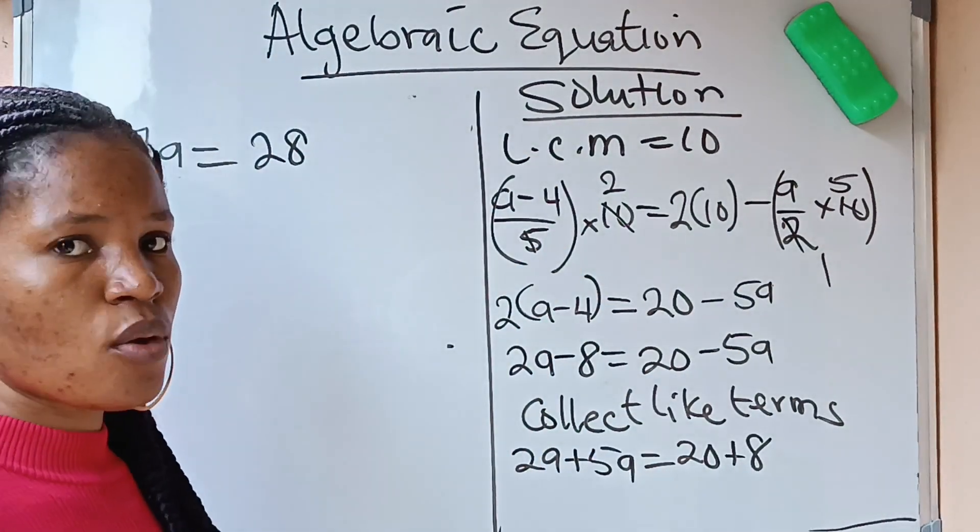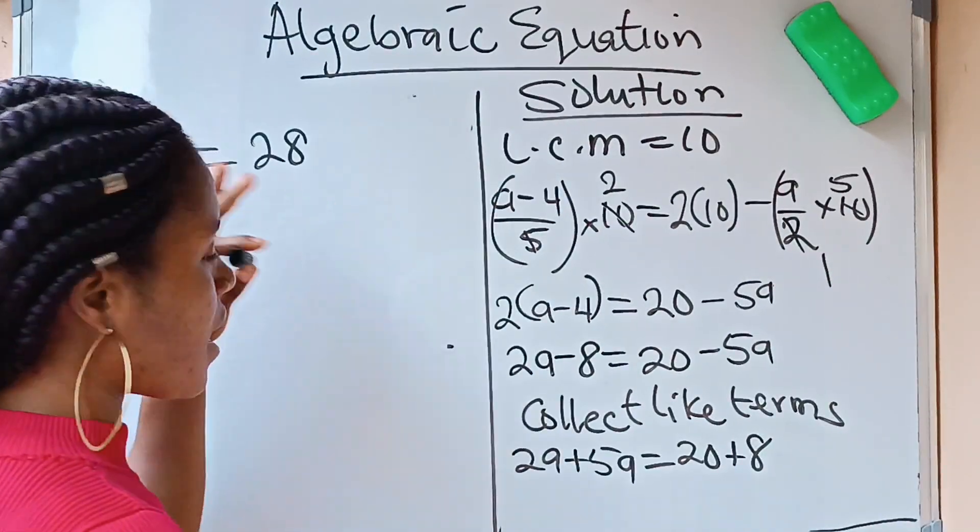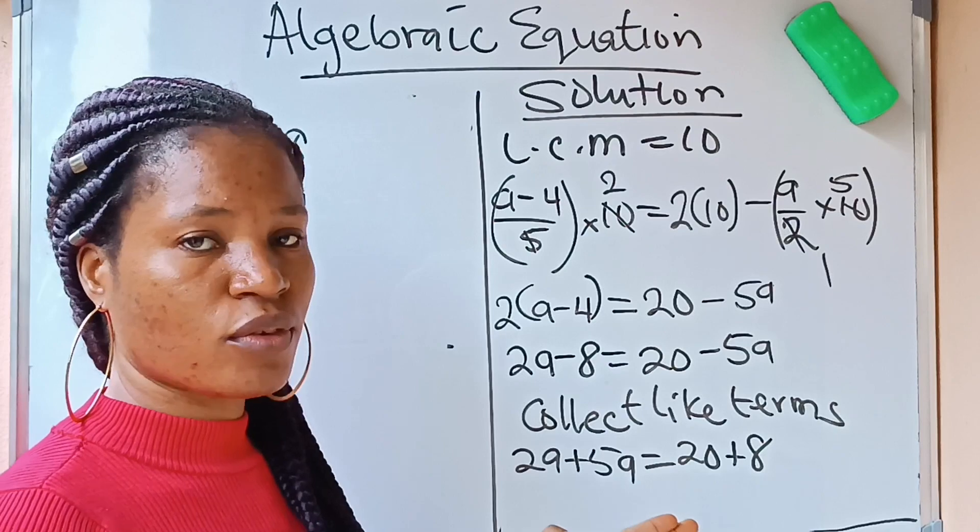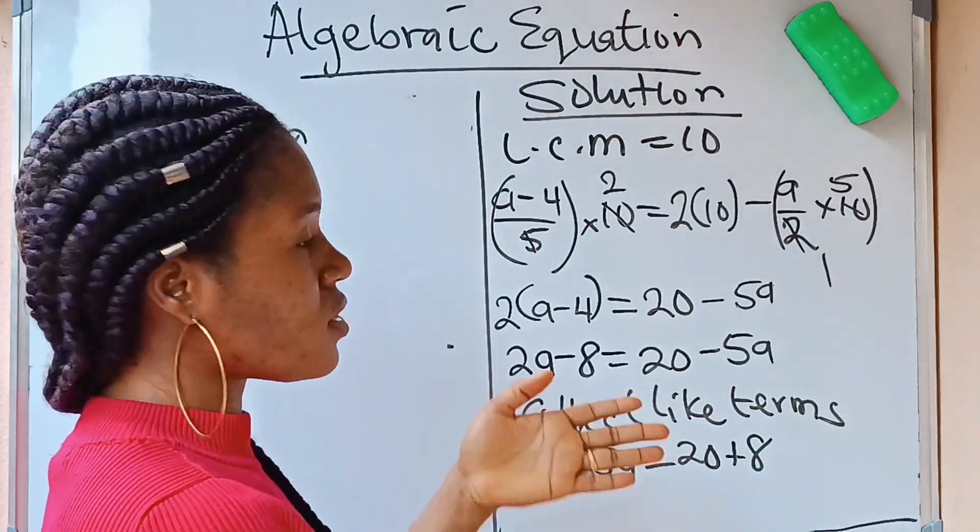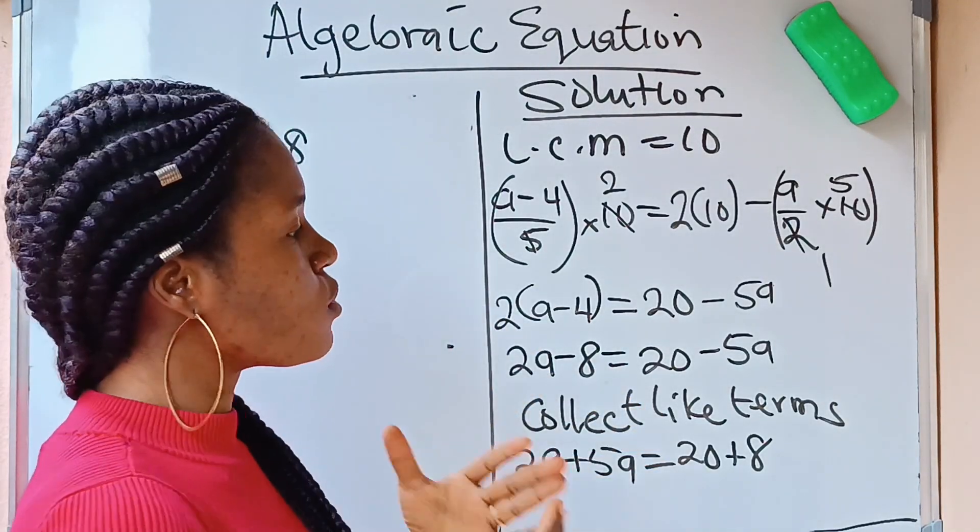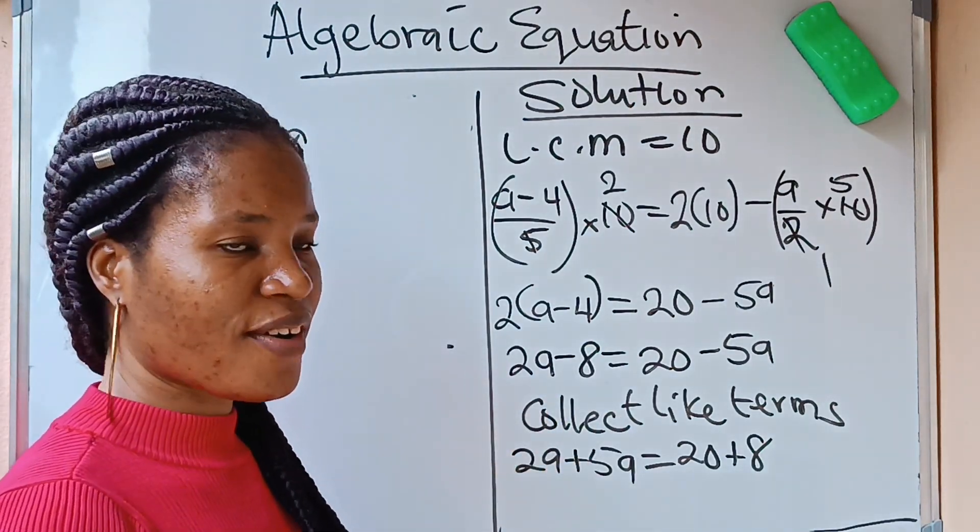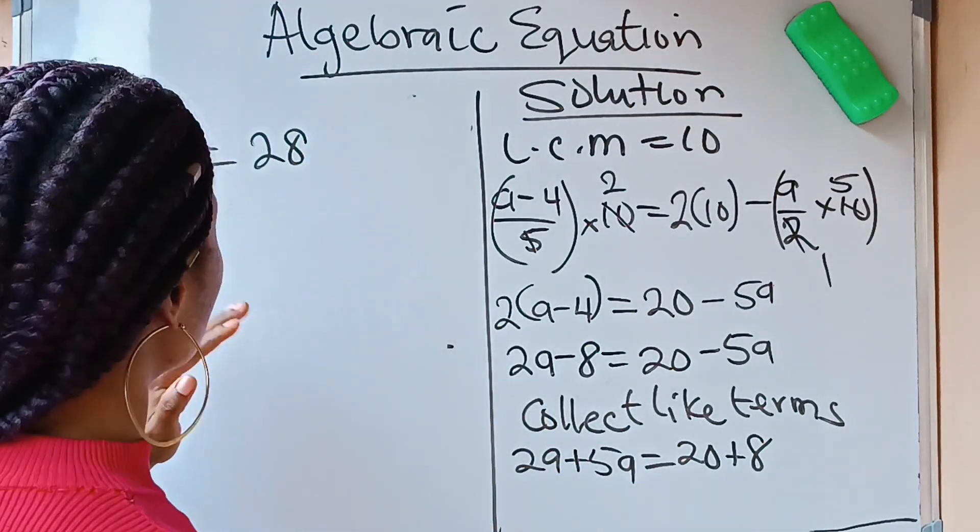Now, for us to get our A, we are going to divide both sides by 7. But, if you have actually followed me to this level, it means that you found what I am doing interesting. For you to see more of this, then please subscribe to the channel.